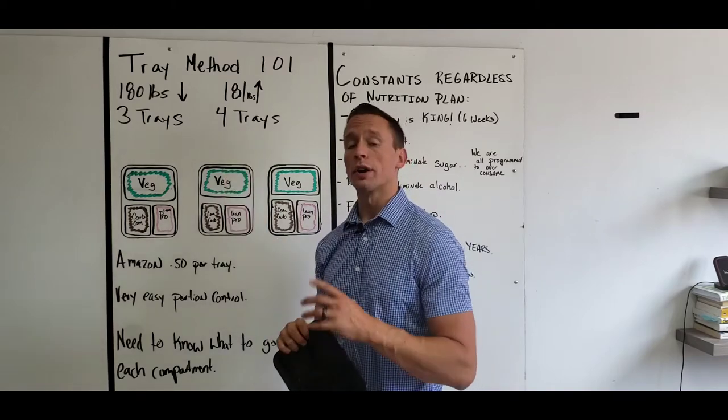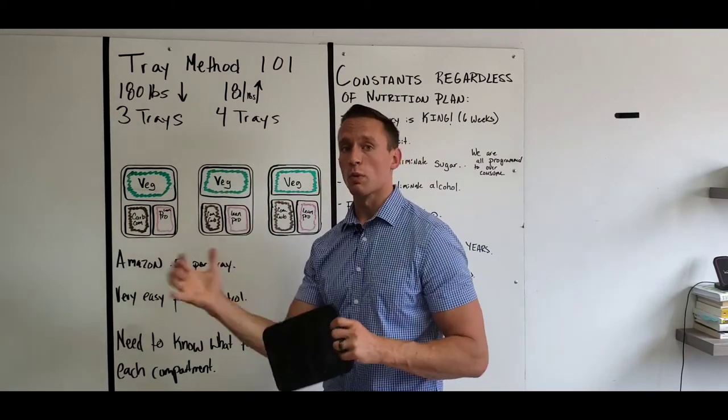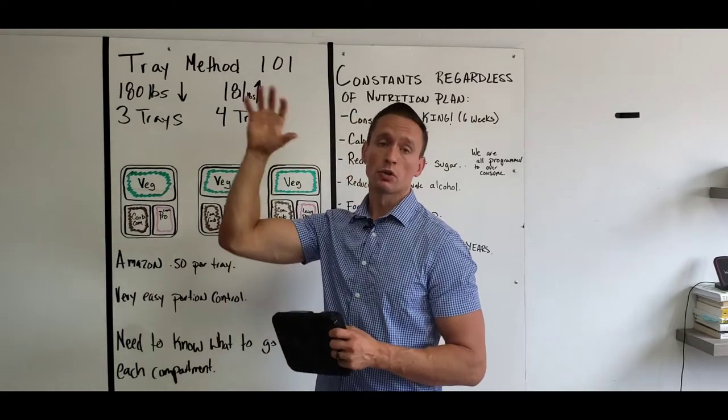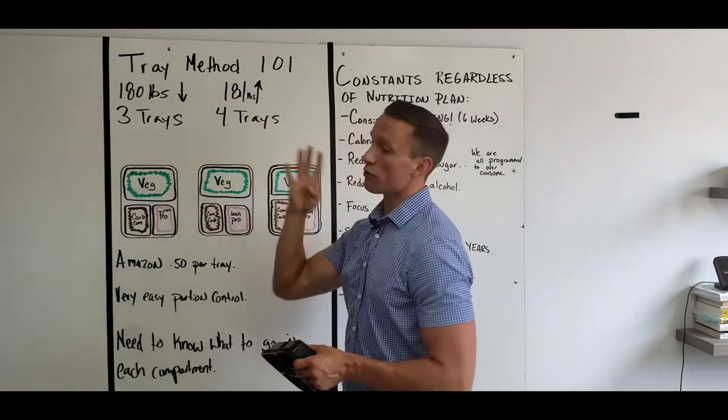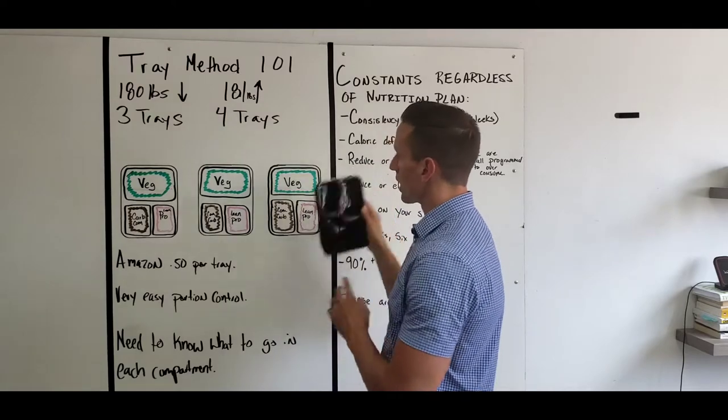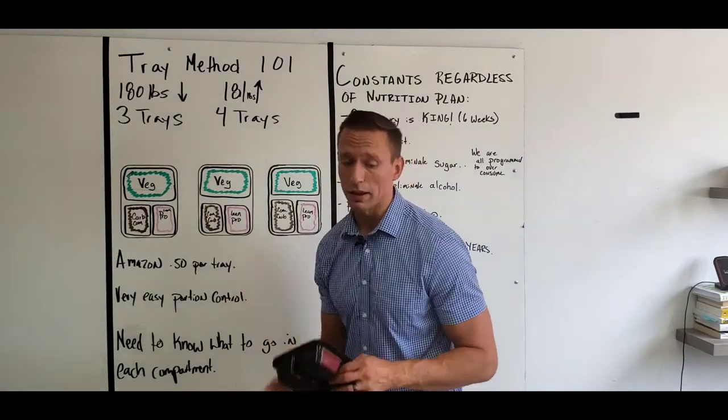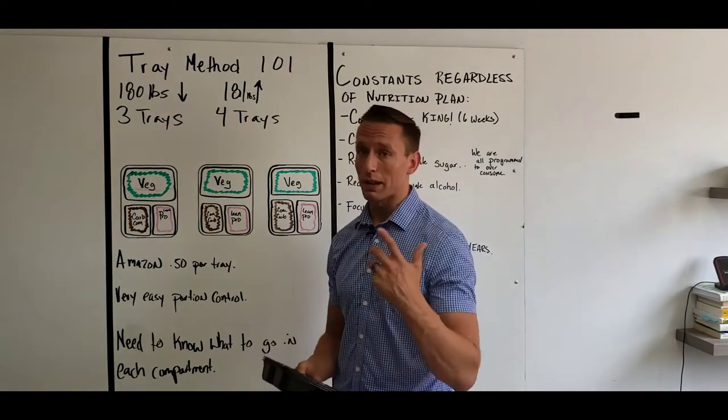If we are 181 pounds and above and that's where we're going to stay, maybe we're a bigger male. Maybe we want to be about 200 pounds or a goal weight. We're going to go four trays. So imagine one more tray on that board. Very simple to understand. That's why the tray method is probably one of my recommended methods for men and women.